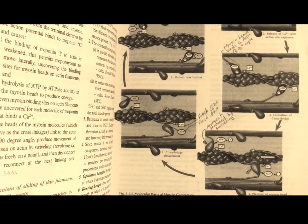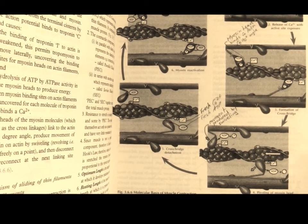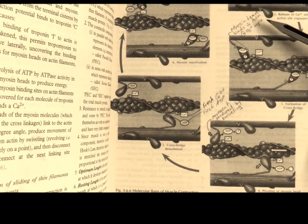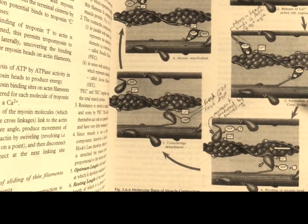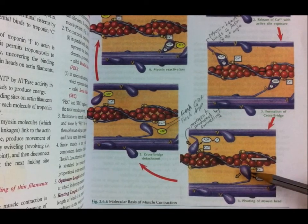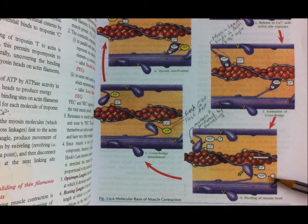Now, the exposure of the active sites causes the release of calcium. And as you can see, the myosin head binds with actin at a 90 degree angle. This causes the formation of a cross bridge. At this point, energy which is stored in the myosin head is released, along with the ADP and inorganic phosphate.